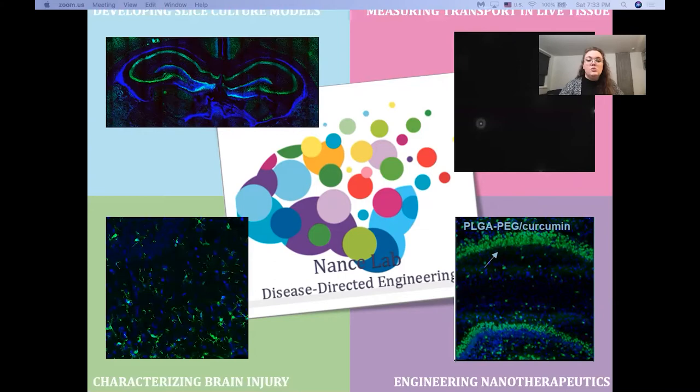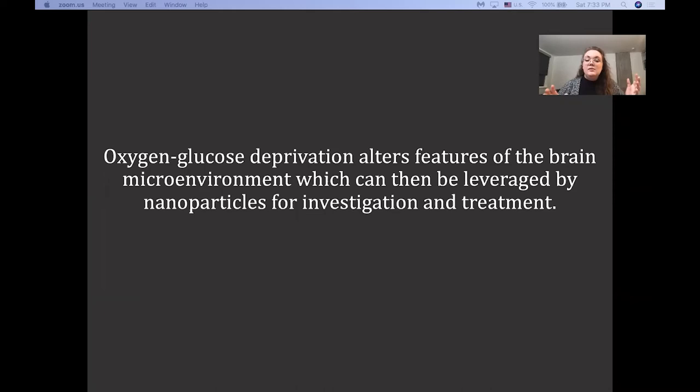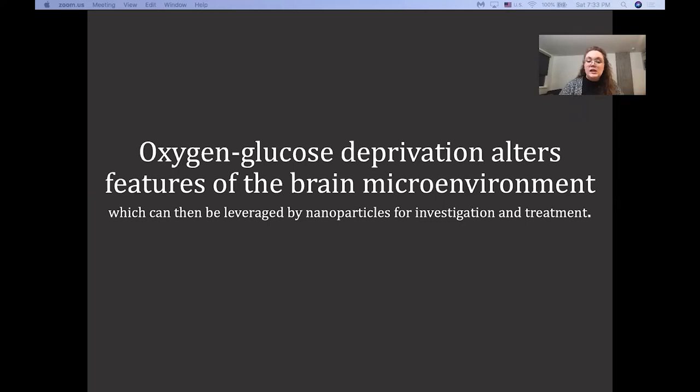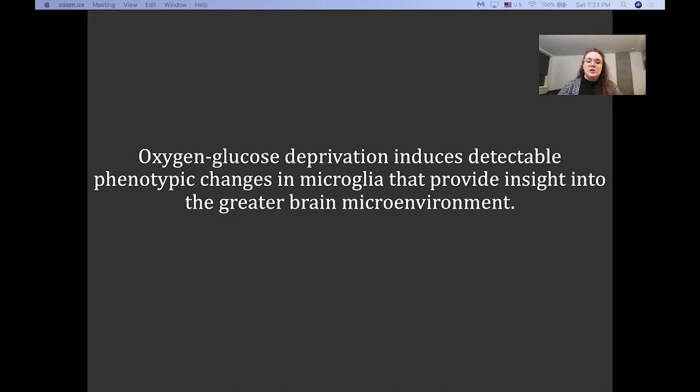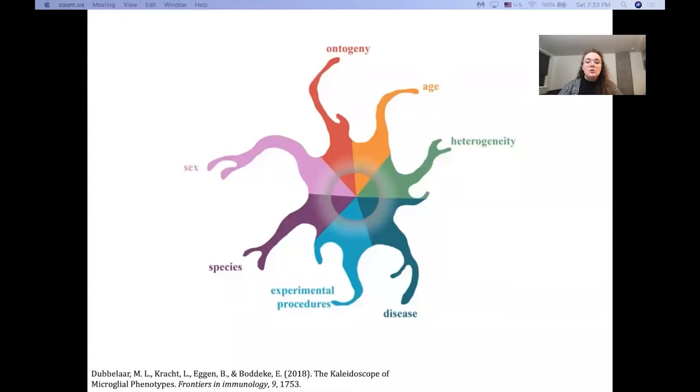So when we talk about this bigger hypothesis, because of its complexity, we're actually able to break it up. And I have a hypothesis that falls into this first category, that oxygen glucose deprivation actually induces detectable phenotypic changes in microglia that provide insight into the greater brain microenvironment. It's been known for a while that microglia phenotypically change in response to many factors, such as those pointed out by Dubilar in Frontiers in Immunology, including age, brain region, and disease amongst others.